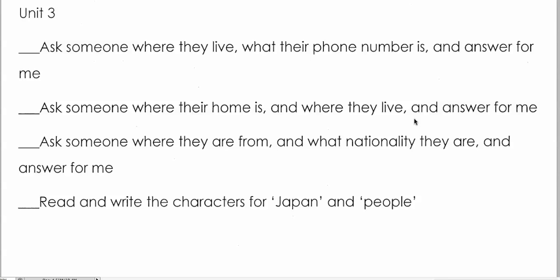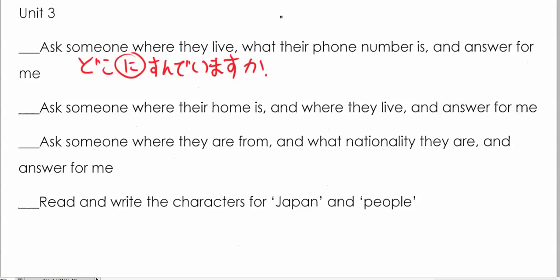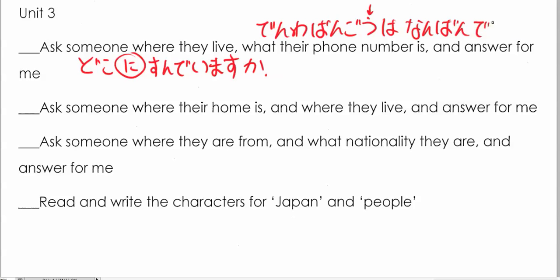Unit 3 was about personal information — asking where people live, what their phone number is, and answering. Where you live: remember it's 'doko ni sunde imasu ka.' A lot of people forget the 'u' — denwa bango wa nanban desu ka — and when you answer you would say 'Coquitlam ni sunde imasu.'